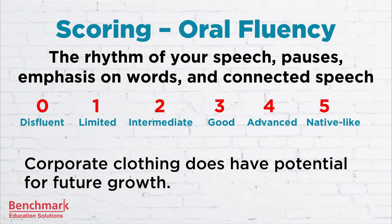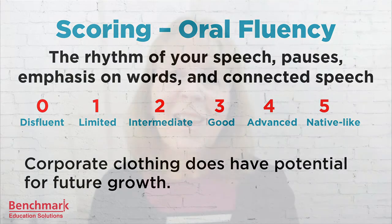Let's take another look at a sentence from our example: 'Corporate clothing does have potential for future growth.' The fact that 'does' is included in this sentence means that it should be emphasized in your speech. Usually we don't use 'does' as a helping verb unless we have a negative sentence or we're asking a question with a verb other than 'to be.' In this sentence, we're using 'does' to emphasize the positive nature of the sentence.